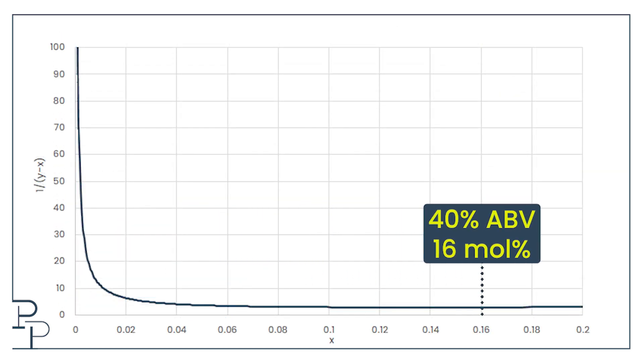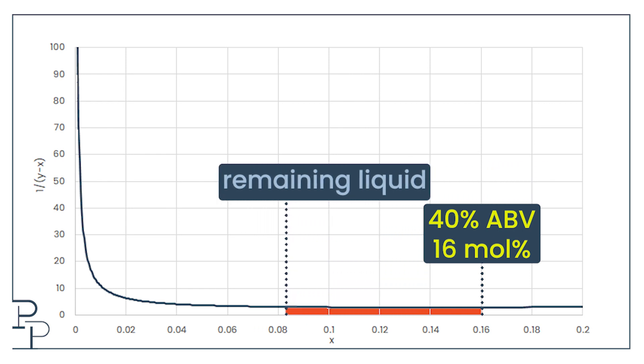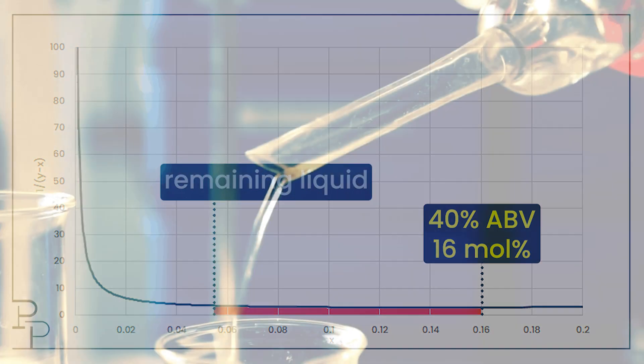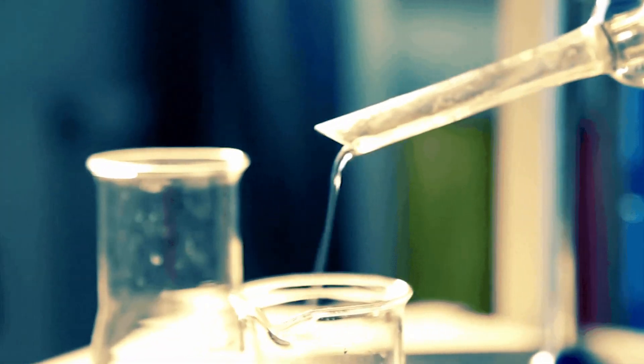If we zoom in a little, then you can see what happens as I boil vodka. My alcohol concentration in my remaining liquid drops. That's because all the good stuff is going to the vapor phase. If you're distilling booze, you're interested in the alcohol-rich vapor, not the liquid that's left behind.